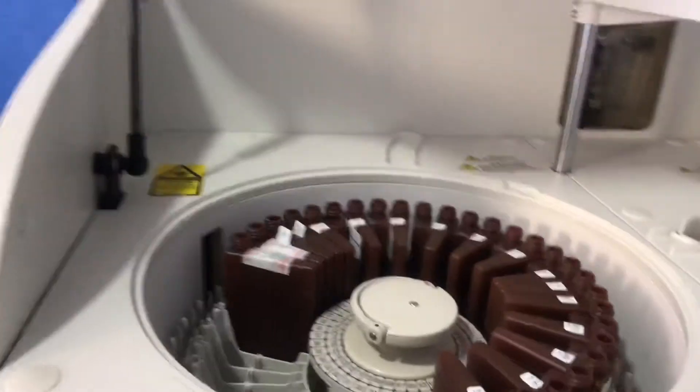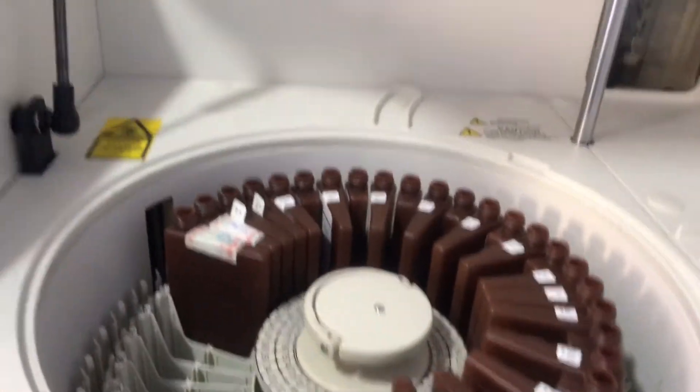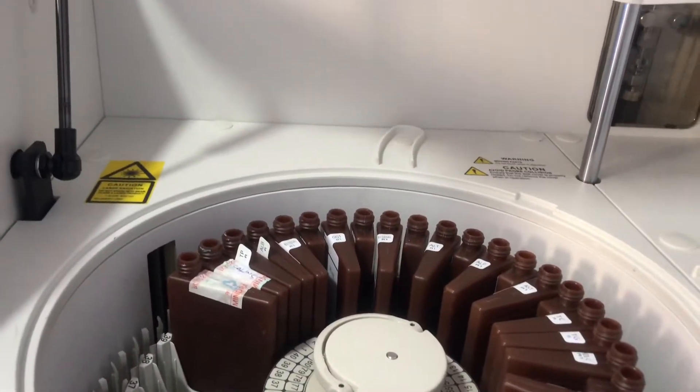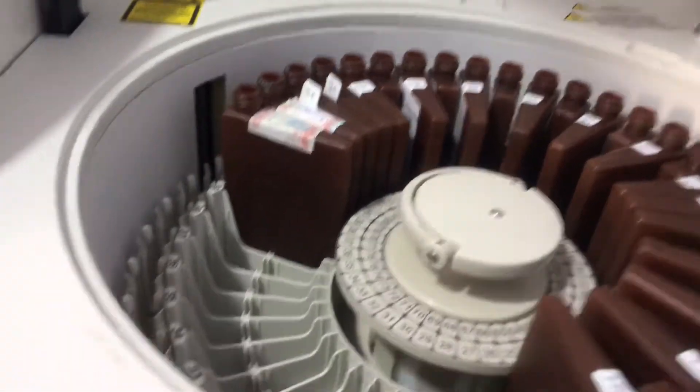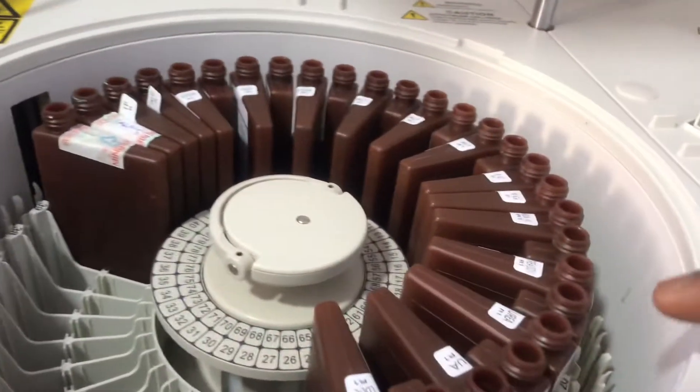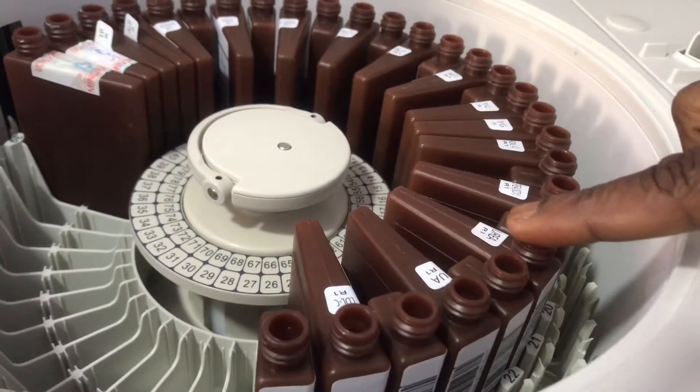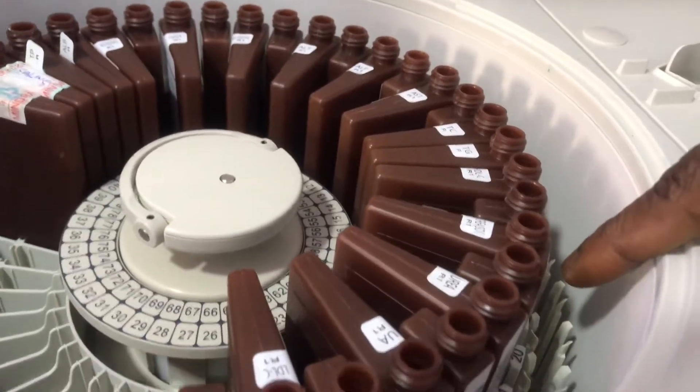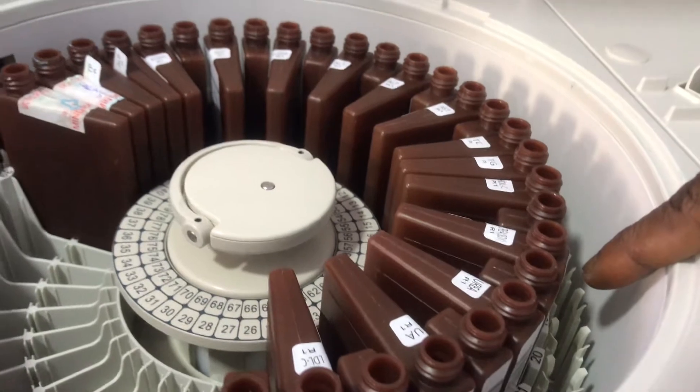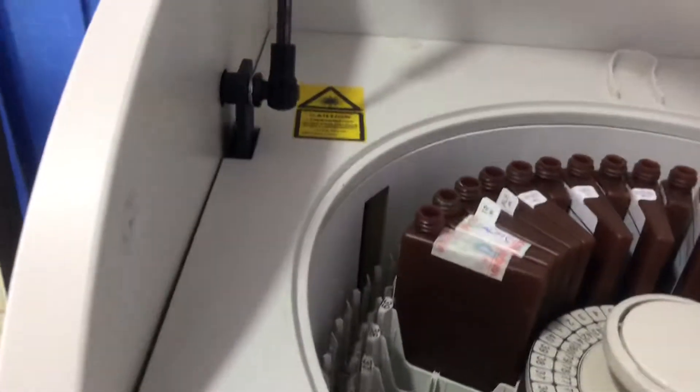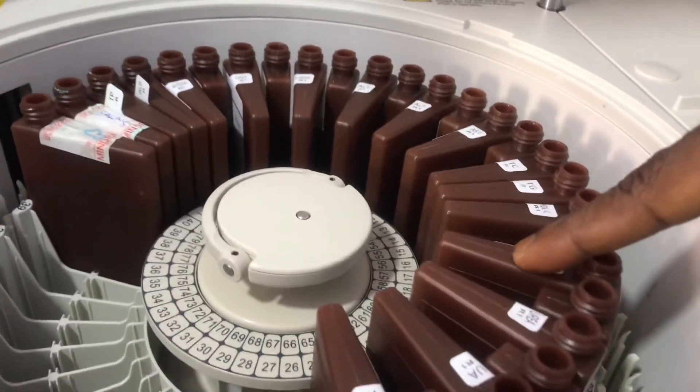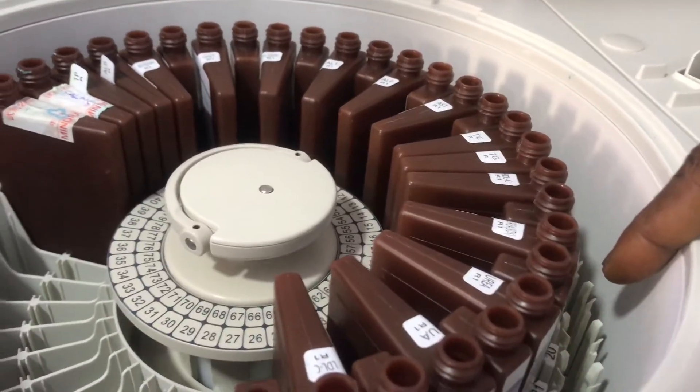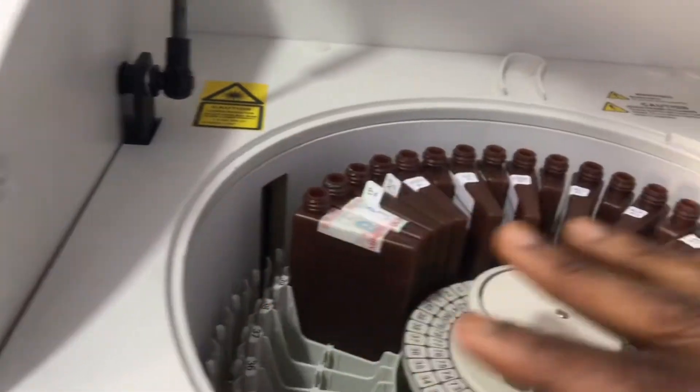So when it's open, this is how it looks like. This is called the sample and reagent carousel. Basically it has a turntable that hosts the reagent, so these are reagents and this is where you place your sample in a tube.